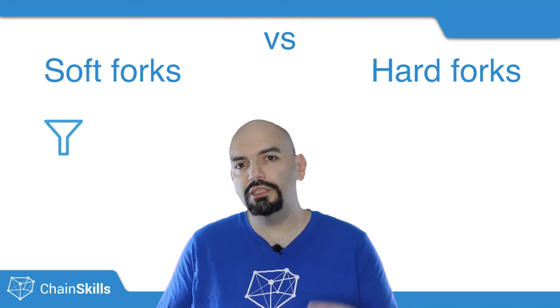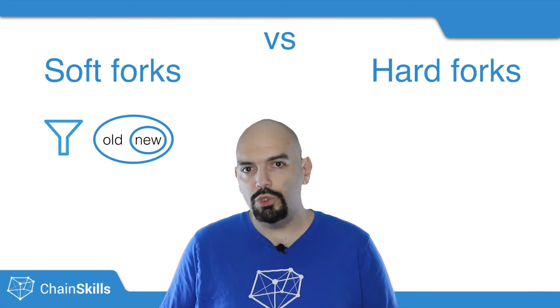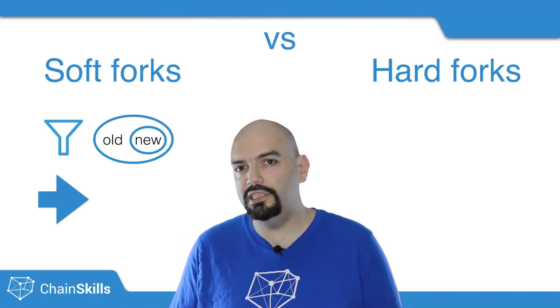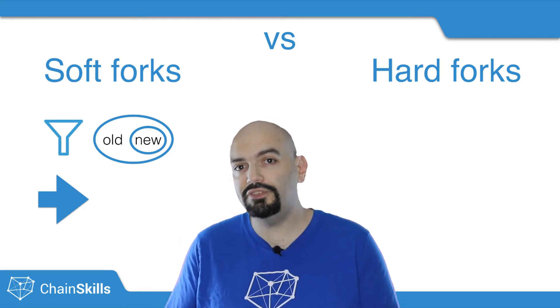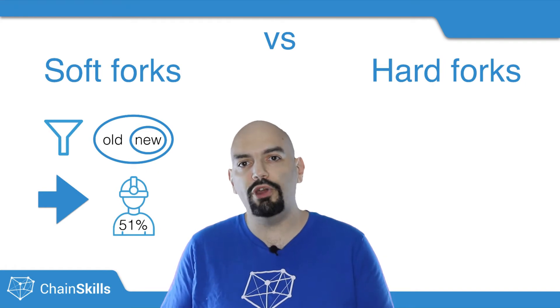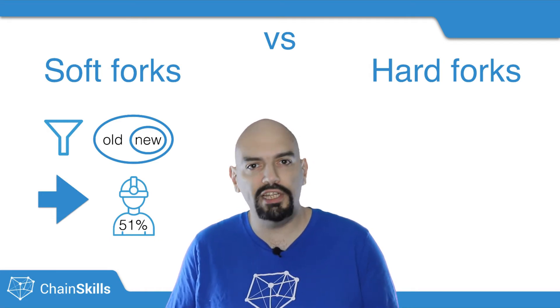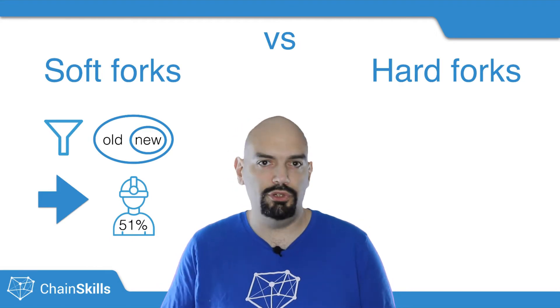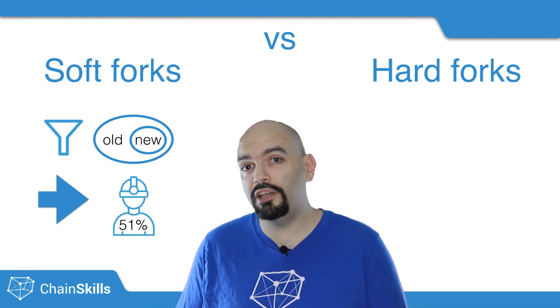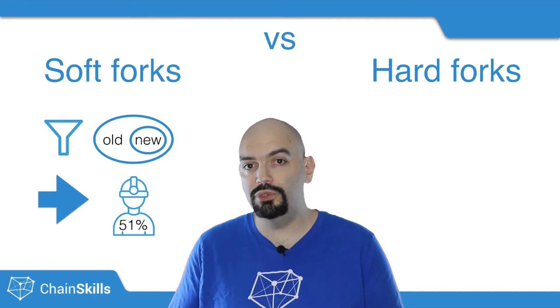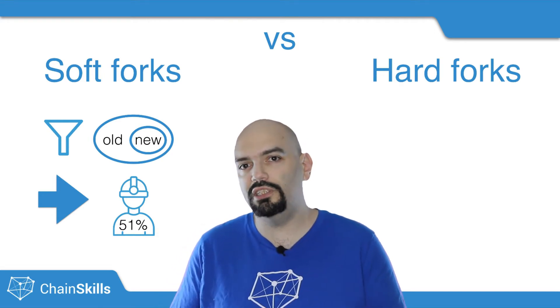Soft forks restrict block acceptance rules compared to older versions — the new rules are a subset of the old ones, which means that every block accepted by the new rules will also be accepted by the old rules. That's why we say that soft forks are forward compatible. The only thing needed for a soft fork to be successful is to have at least 51% of the mining power upgrade to the new software. Miners that don't upgrade will start building blocks that are not validated by the upgrading nodes, making it very risky not to adopt a soft fork. Such forks are usually temporary and less risky.